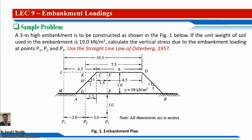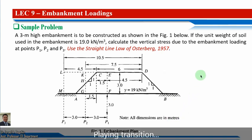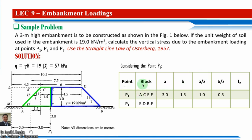For our approach, I have prepared a table to calculate parameters a, b, and the ratios a/z and b/z, and consequently the influence factor I_z. The unit weight of the embankment is 19 kN/m³, and since the depth is 3 meters, q = 19 × 3 = 57 kPa.